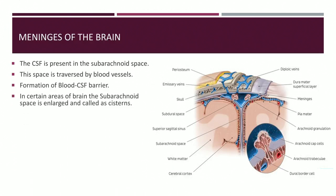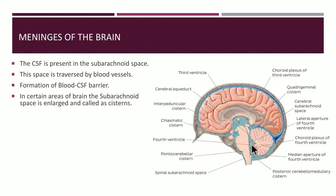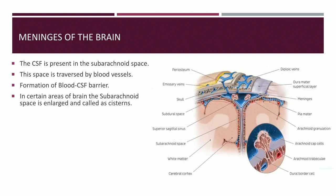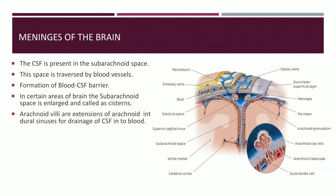The subarachnoid space is enlarged at certain places, forming cisterns. These are large collections of CSF. Major cisterns include the cisterna magna (cerebellomedullary cistern), cisterna pontis, interpeduncular cistern, and cisterna ambiens.